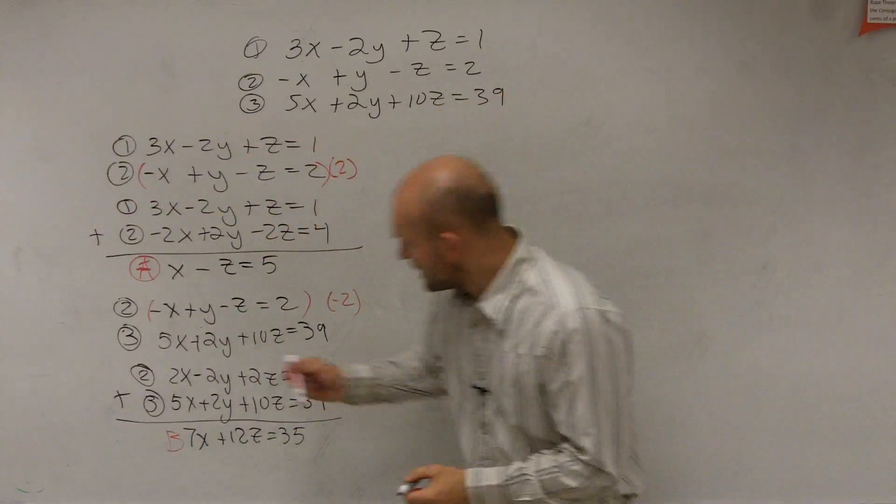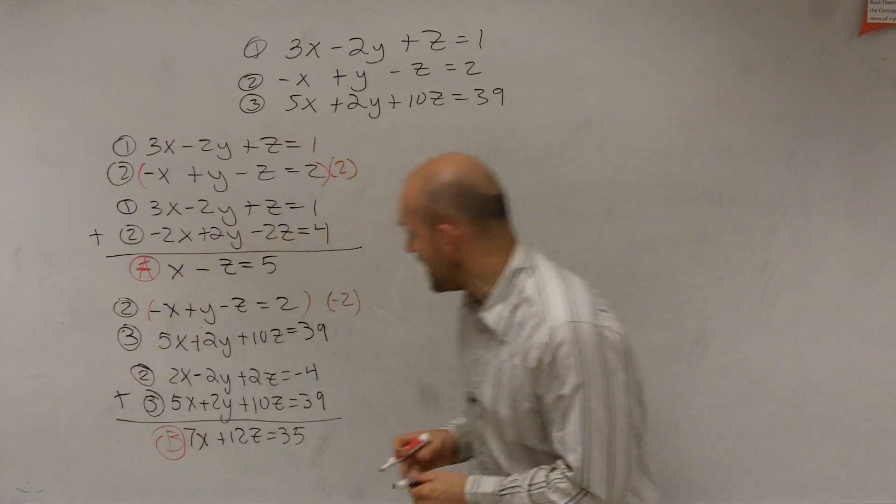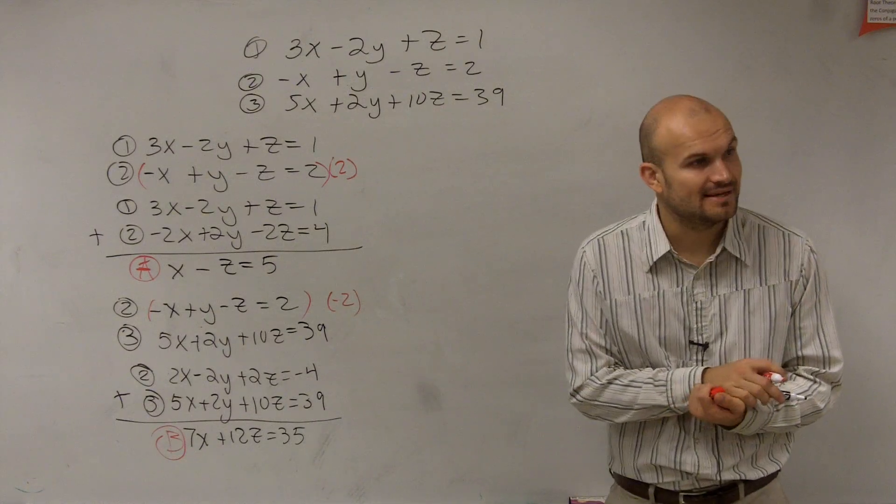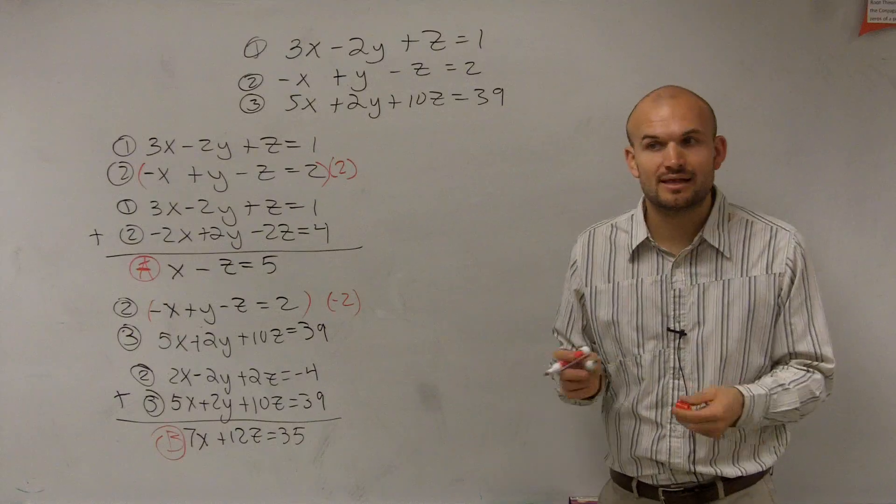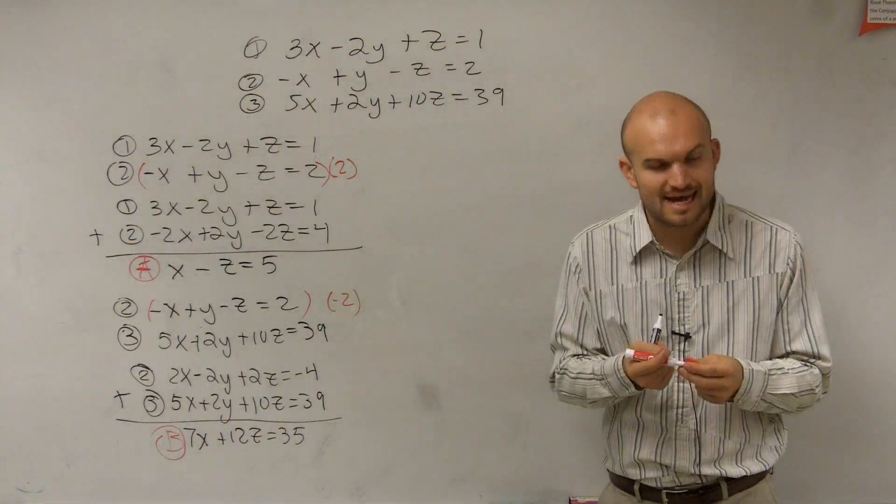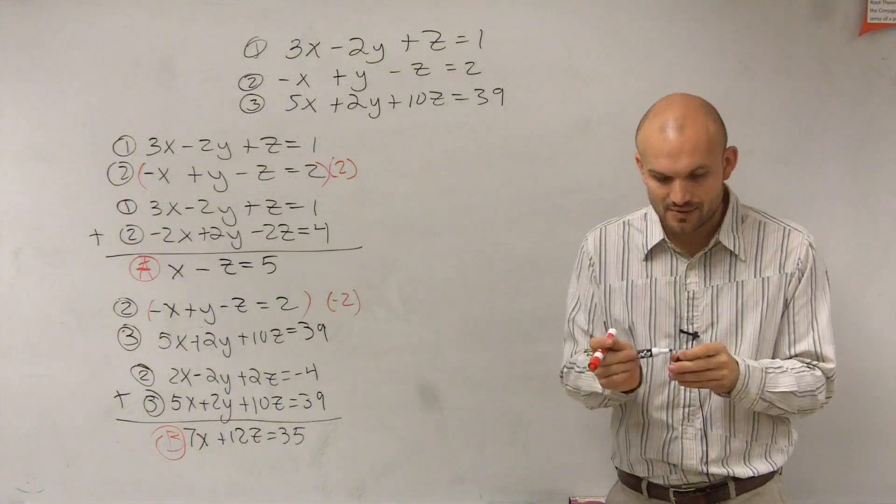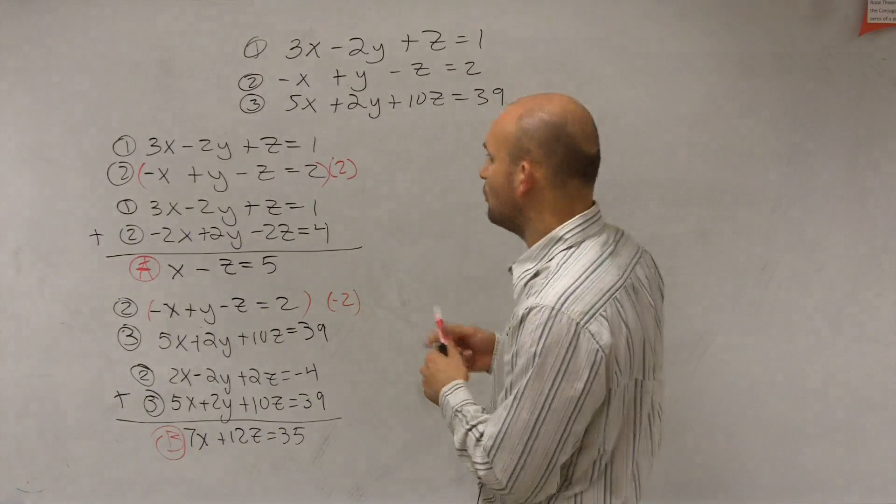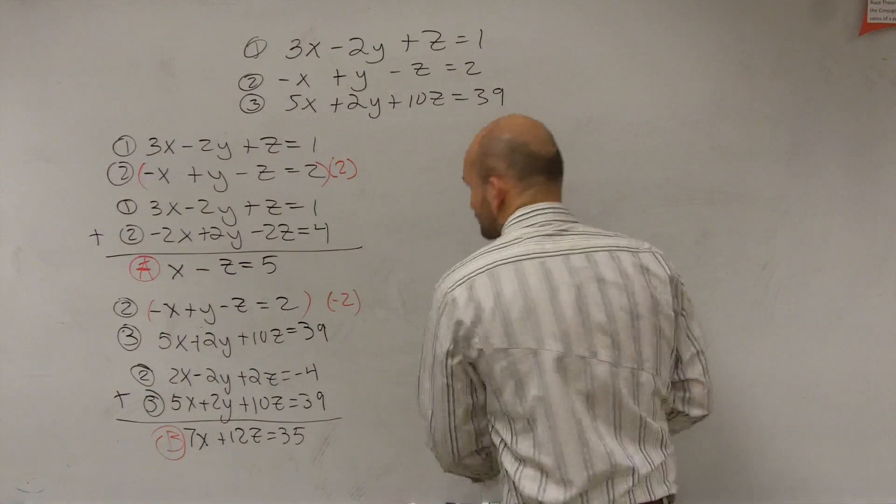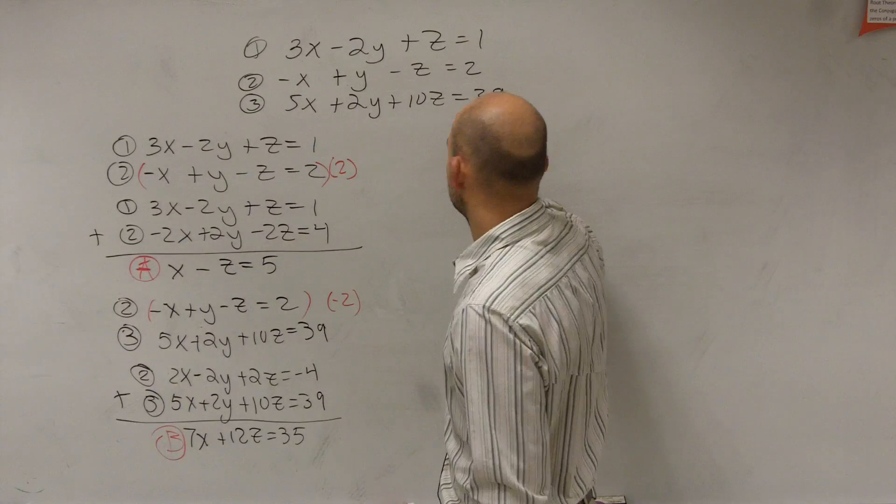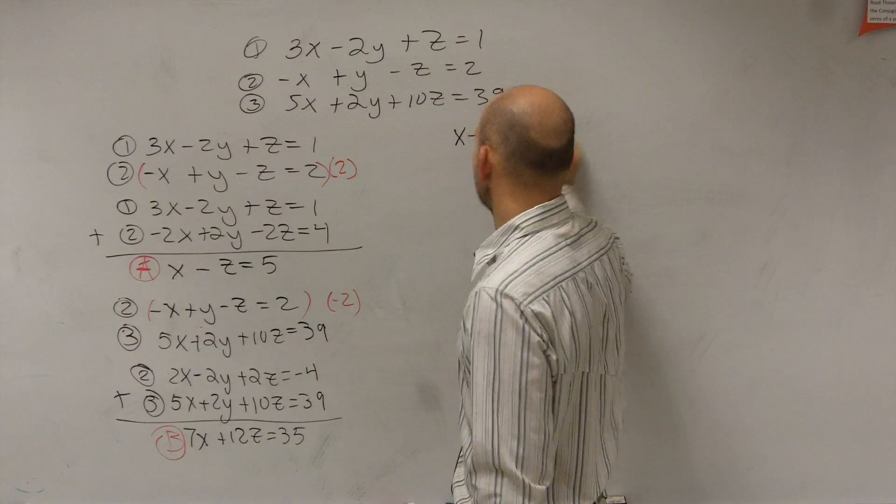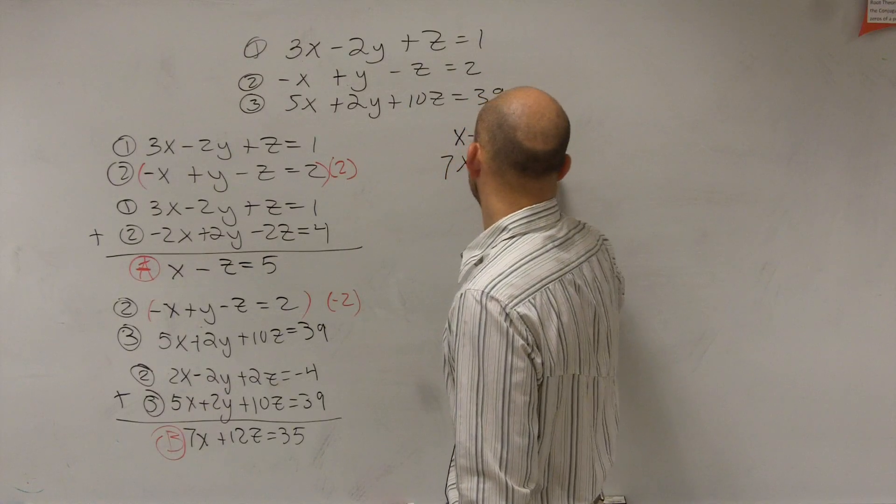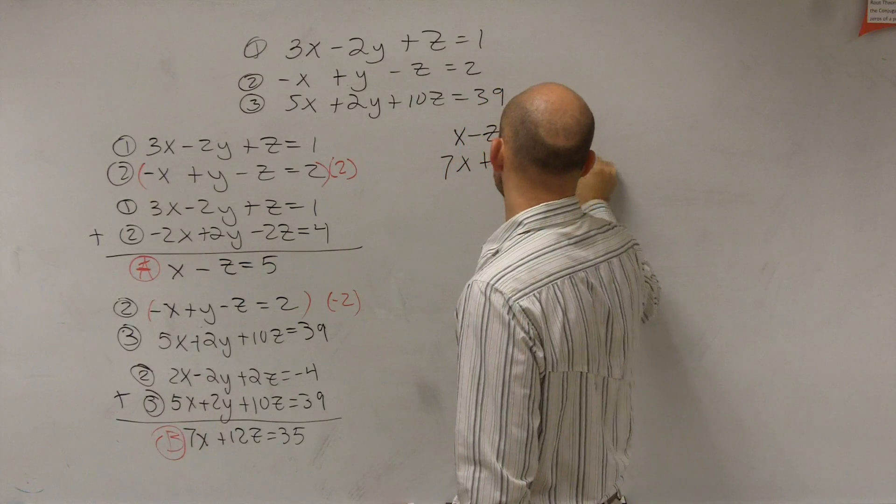So now if you guys notice, when I look at equation B and A, what are the only variables of A and B? x and z. So by using my elimination of my three variables, I got it down to two variables. And that's what I want to do. I want to get it down to a system of two equations of only two variables. So now I have x minus z equals 5 and I have 7x plus 12z equals 35.